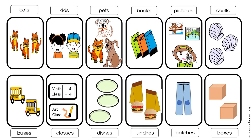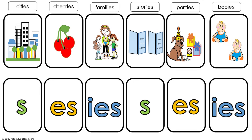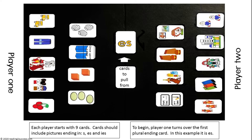Games are a great way for kids to practice learned skills. These are the game templates: 18 plural pictures and 6 plural endings. Each player starts with 9 cards. Cards should include pictures ending in s, es, and ies.